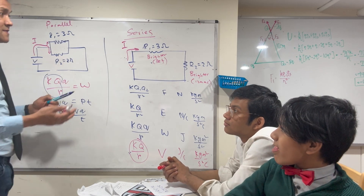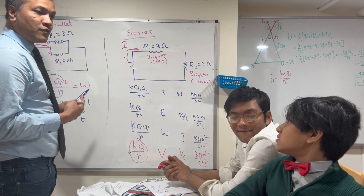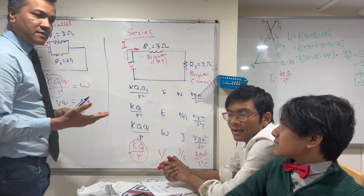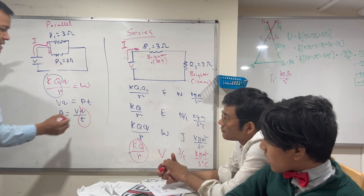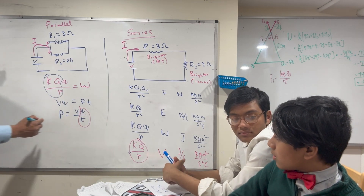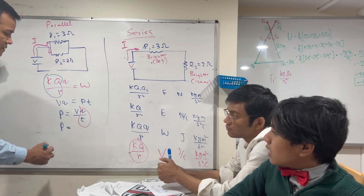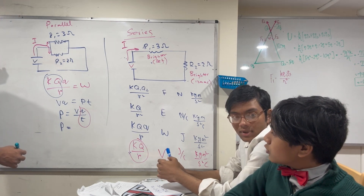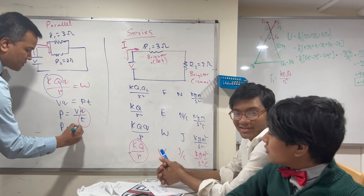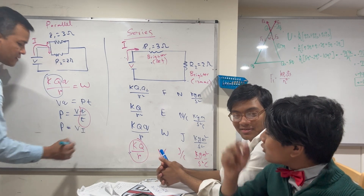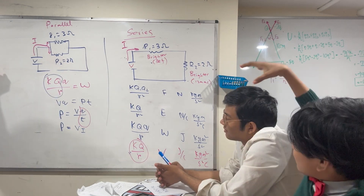If there is no resistance, then what happens? Everyone goes too fast, and there will be a short circuit. What is the name of Q over T? — I thought you were asking for the units — Coulombs per second. It's current. Oh, I see — so it's implied.